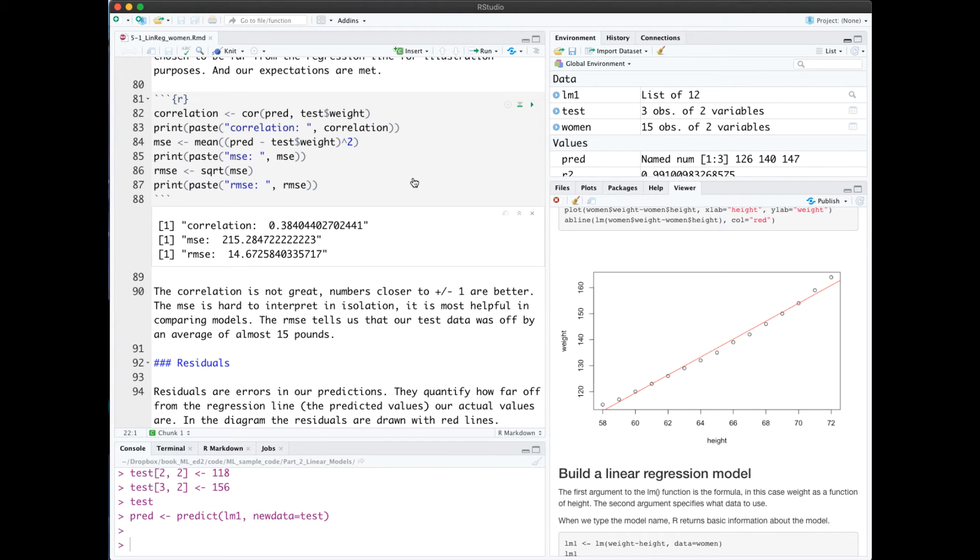Next, we're going to use some evaluation metrics to see how well our model fit our test data. This code block computes correlation, MSE, and RMSE.